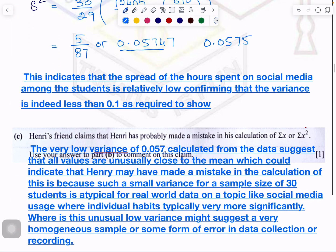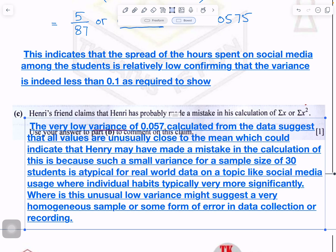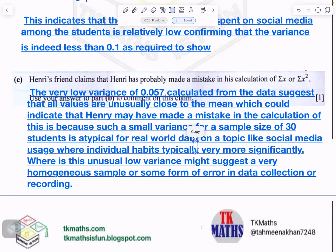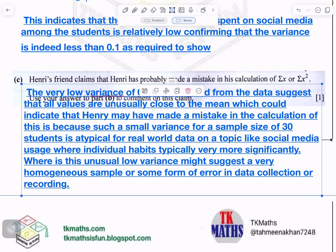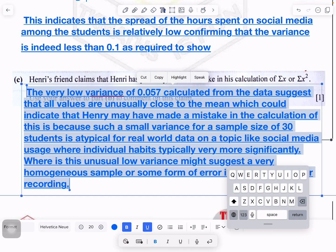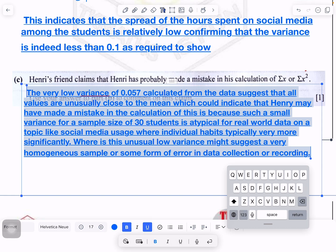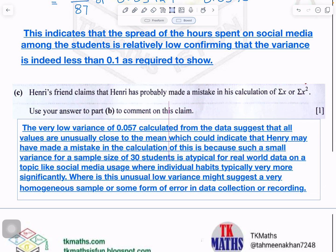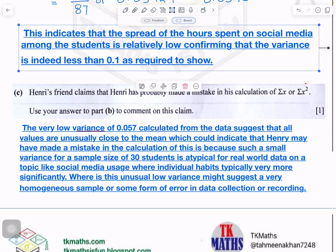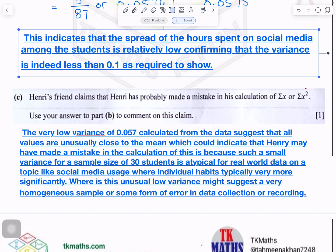Now, the other part of the question, sorry, it was overlapping. Let me just write it separately here. Let me decrease the size only. Then, you will be able to read. Just give me a few minutes. Okay. Now, actually, when I was writing in my handwriting, it was becoming too large. So, I turned it into text. Henry's friend claimed that Henry probably has made a mistake in his calculation. And you have to comment on it with respect to your answers of part B. In part B, your mean was 20.3 hours and your variance was 0.0575.